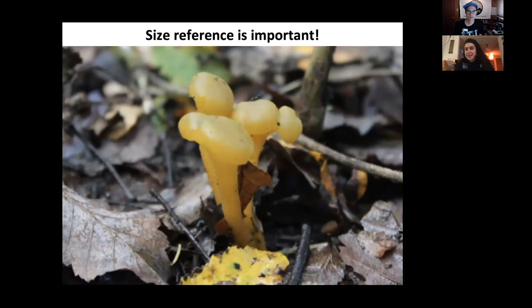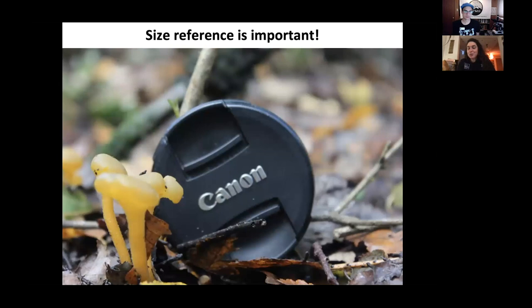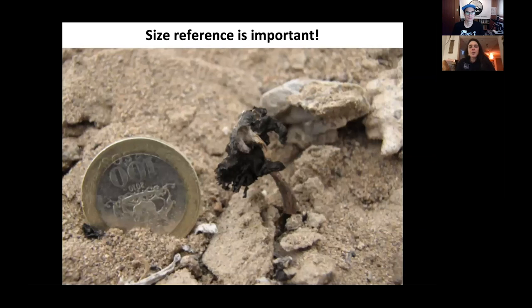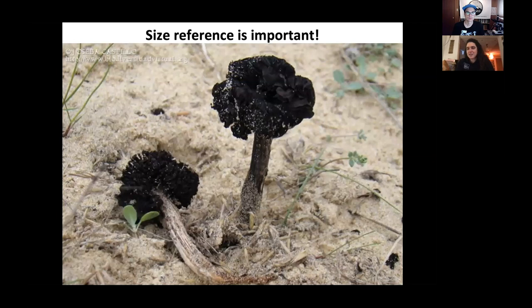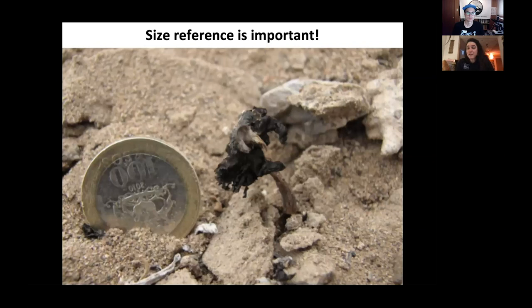Why use a size reference? In the case of this fungus — a beautiful Leotia — with just the photograph, I have no reference of size, but as soon as I put a size reference in, you realize the dimension. This could look huge, the size of a Bolete, but really it's five centimeters tall. I don't recommend using lens caps because there are different diameter lenses. In some cases a coin is better. If I hadn't used a Chilean 100 peso coin, I would have no way of knowing the size of this Montagnea Arenaria — a desert fungus — but you realize it's very small, smaller than a US quarter.